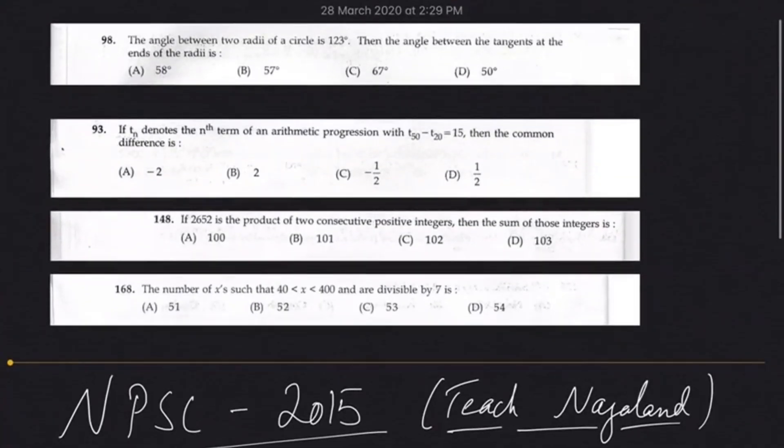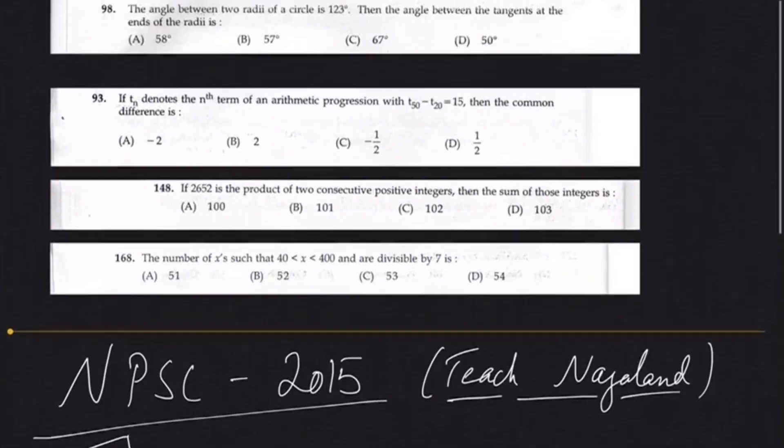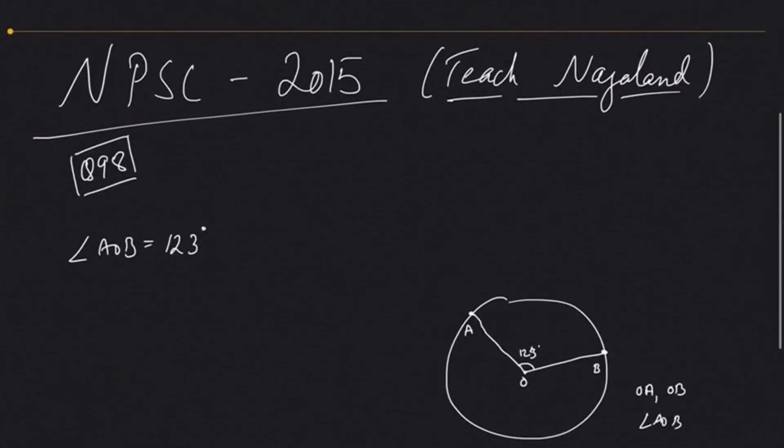Angle AOB is given as 123 degrees. Then the angle between the tangents at the end of the radii. If you draw a tangent at this point and another tangent at this point, a tangent is a straight line that passes through a circle.